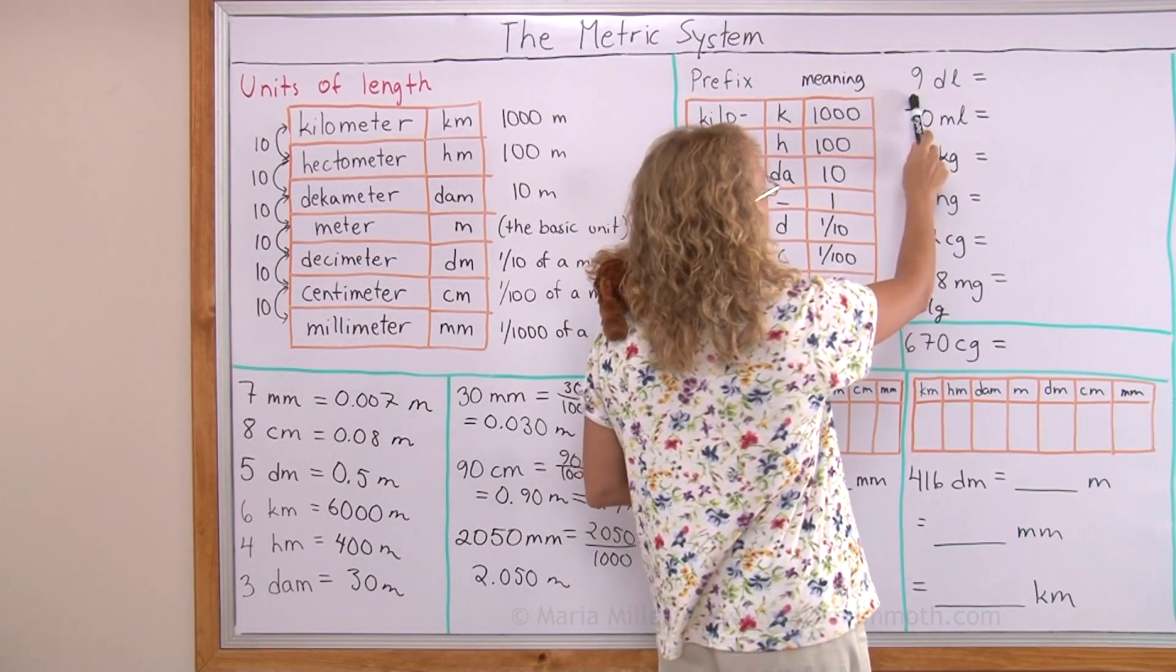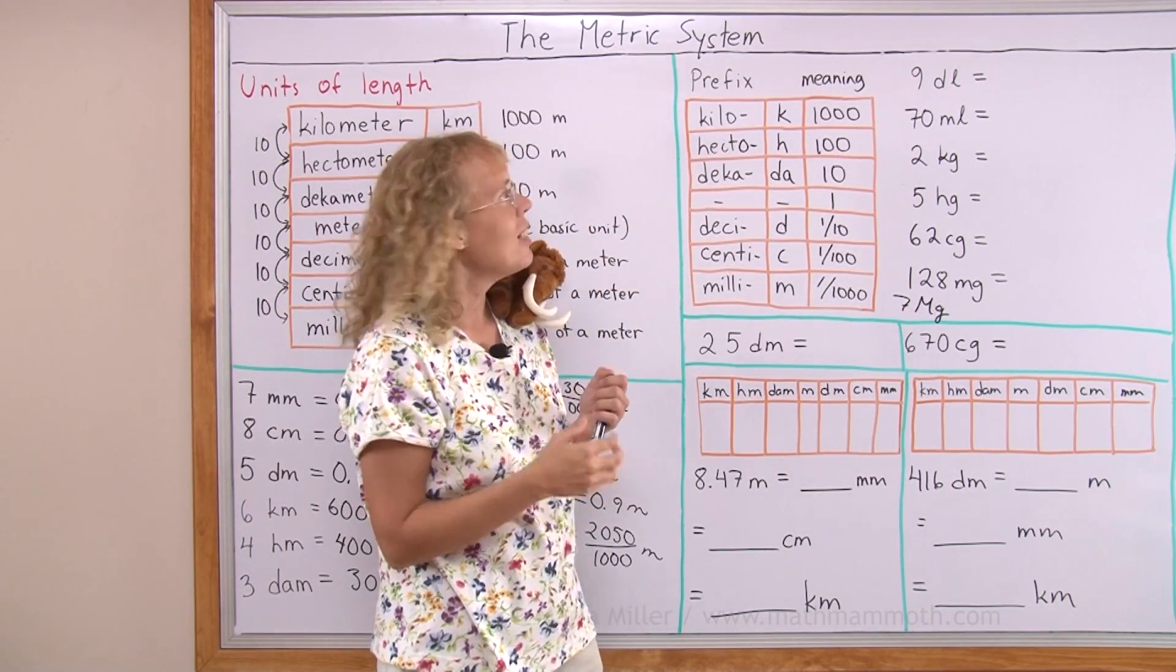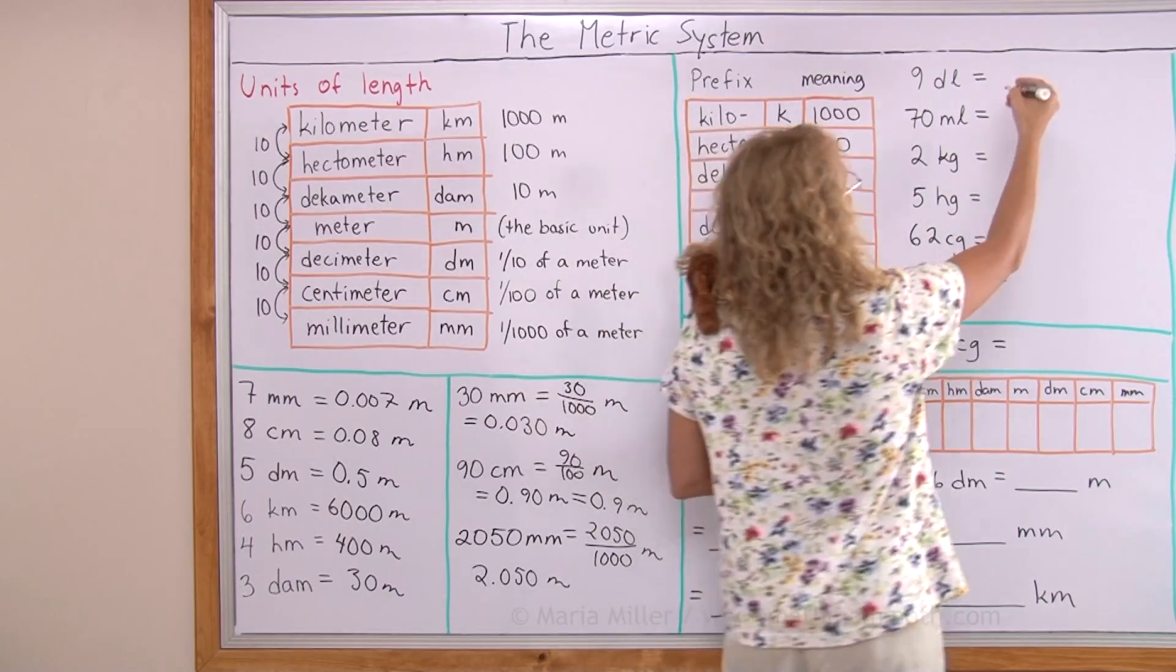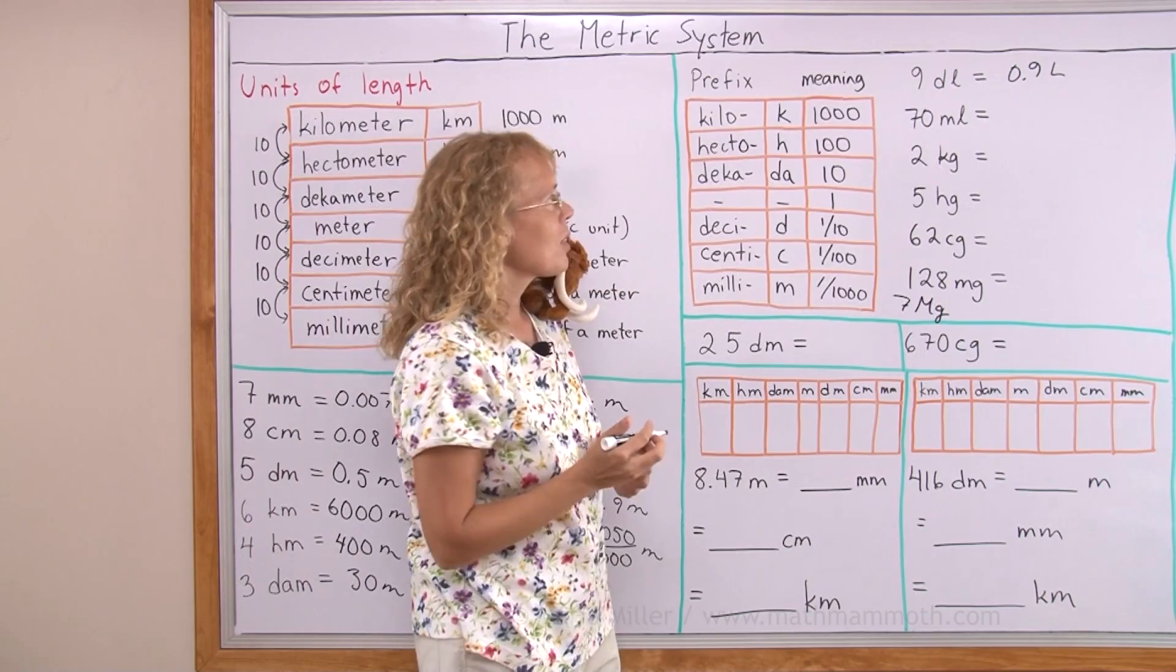Let's do a few more exercises. Nine deciliters into the basic unit, liters. Deci, meaning a tenth, so I have nine tenths. As a decimal, 0.9 liters.